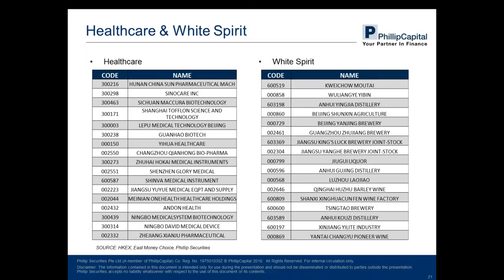The next sector we identified is healthcare and white spirits. All the stock lists we chose are from the Shenzhen Hong Kong Stock Connect and Shanghai Hong Kong Stock Connect. It's worth mentioning that white spirits are a feature of the A-share market. Related stocks have drawn much attention from global investors. There are very many high-quality companies with good performance, like Guizhou Maotai, whose stock price just hit an all-time high this week and became the most expensive stock in the A-share market.